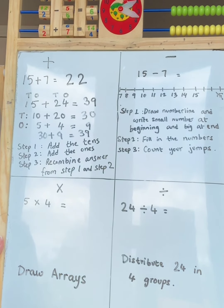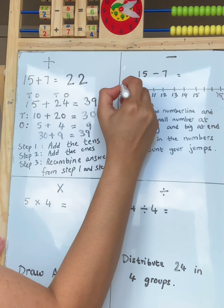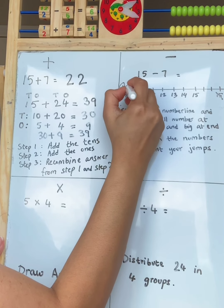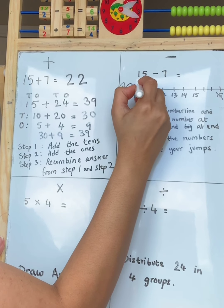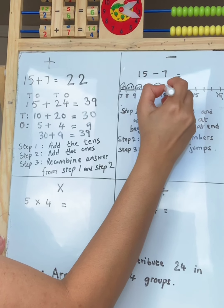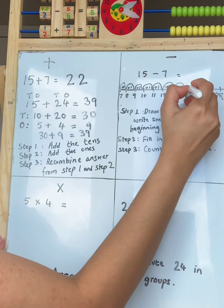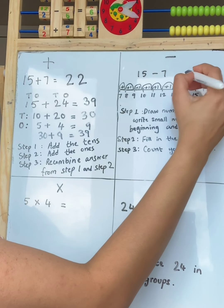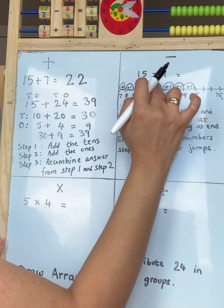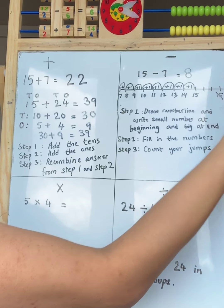Step 3. The last one. Easy peasy. Count your jumps. I'm going to do my jumps now. That's 1, 2, 3, 4, 5, 6, 7, 8. 1, 2, 3, 4, 5, 6, 7, 8. My answer is 8. Good job!